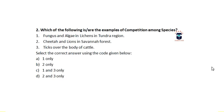The next question is: which of the following are examples of competition among species? First, fungus and algae in lichens in tundra. Second, cheetah and lions in savannah forest. Third, ticks on the body of cattle. We have to choose the correct answer.